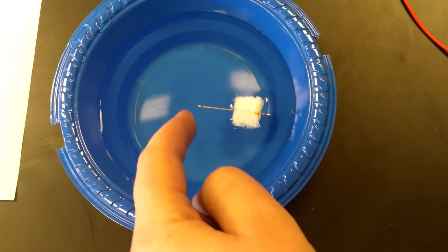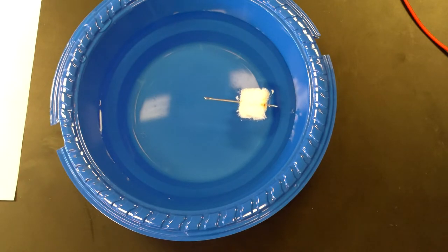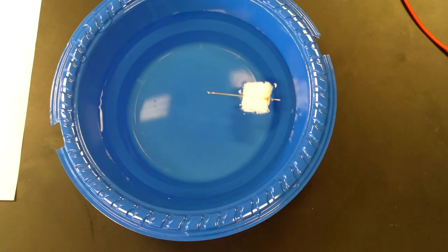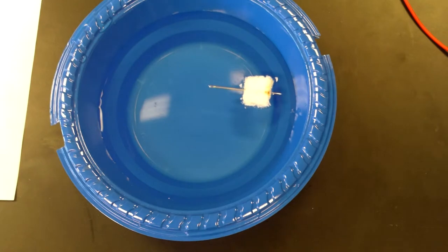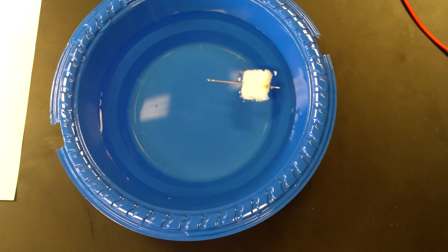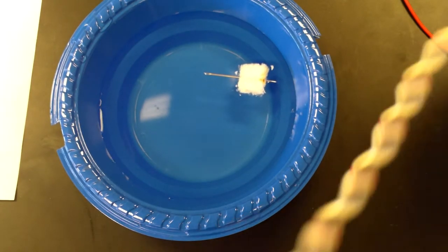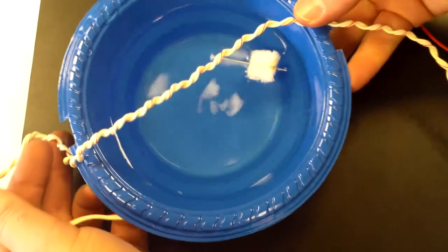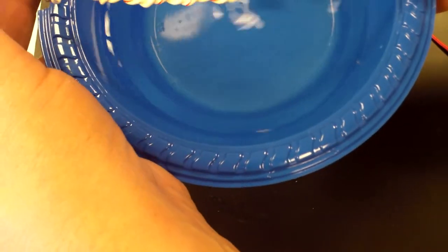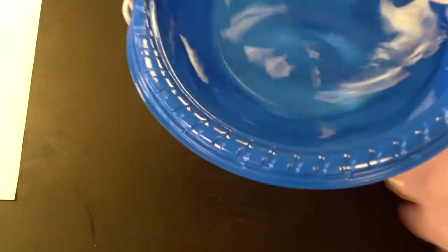So this end is north. Now what I'm going to do, hopefully I can do this without spilling water everywhere, I'm going to wrap a wire around my bowl. I actually should have wrapped it before I filled it but I didn't. Wrap some wire around the bowl. There's going to be a magnetic field from the wire.